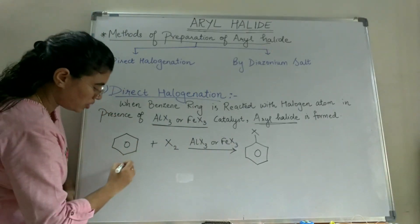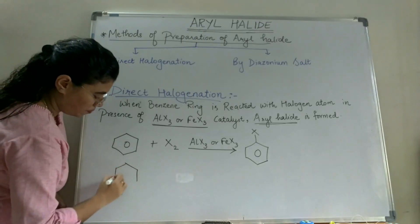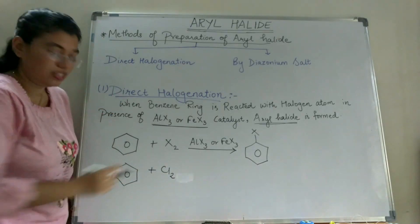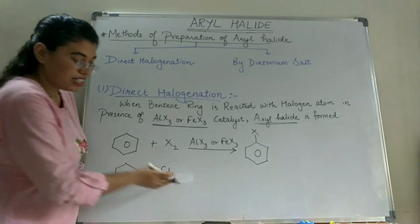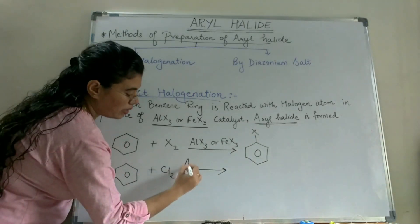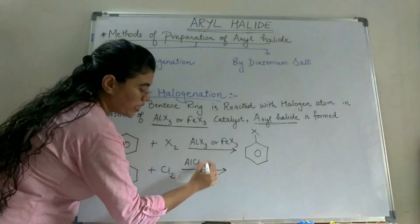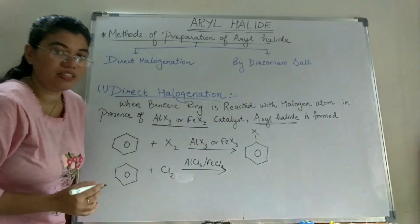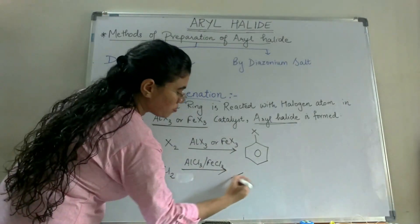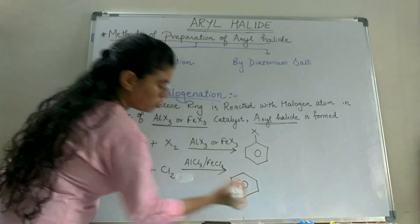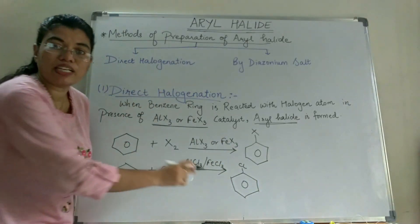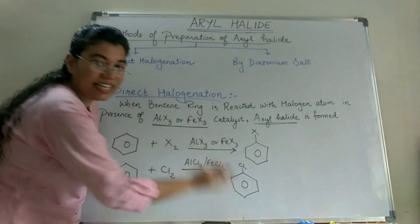Let's take an example. I take a benzene ring and react it with Cl2 — chlorine gas — in the presence of a catalyst, either AlCl3 or FeCl3. These act as Lewis acids. When this reaction is carried out, we get chlorobenzene, where chlorine is attached to the benzene ring. This is an Aryl Halide.